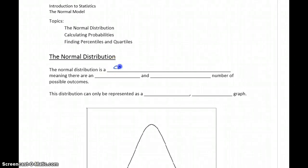The normal distribution is one type of continuous probability distribution. Since it's a continuous probability distribution, that means there are an infinite and uncountable number of possible outcomes.